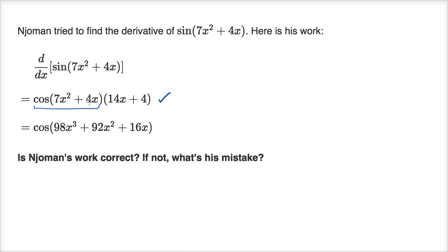But then Njoman does something strange over here. This is the cosine of seven x squared plus four x, and then that whole thing times 14x plus four. But they get confused looking at these parentheses — this is actually one of the key errors that the folks at the College Board, the AP folks told us about: when dealing with transcendental functions like cosine, sine, tangent, natural log that are written like this, people see the parentheses and their brain says, oh, let me multiply these two expressions in parentheses. But that's not right, because this is what this is implying. You can't just take the 14x plus four and multiply it by this assuming you're taking the cosine of the whole thing. So this is where Njoman makes the mistake — the work is not correct, and the mistake is trying to multiply these two expressions and taking the cosine of the whole thing.